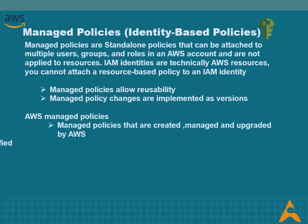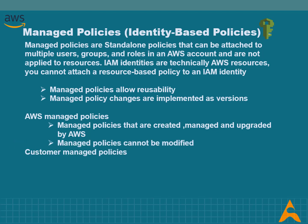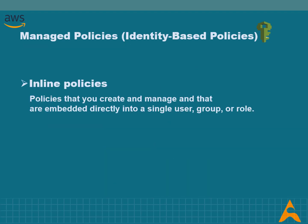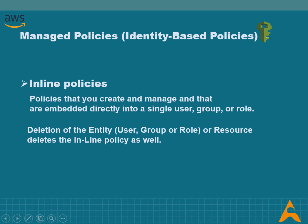There are two subcategories of managed policies. AWS managed policies are created and managed by AWS; if you are new to using policies, it is recommended that you start with AWS managed policies. Customer managed policies are policies that you create and manage in your AWS account, providing more precise control over your policies. You can create and edit an IAM policy in the visual editor or by creating the JSON policy document directly. Inline policies are created and managed embedded directly into a single user, group, or role; deletion of the entity also deletes the inline policy.